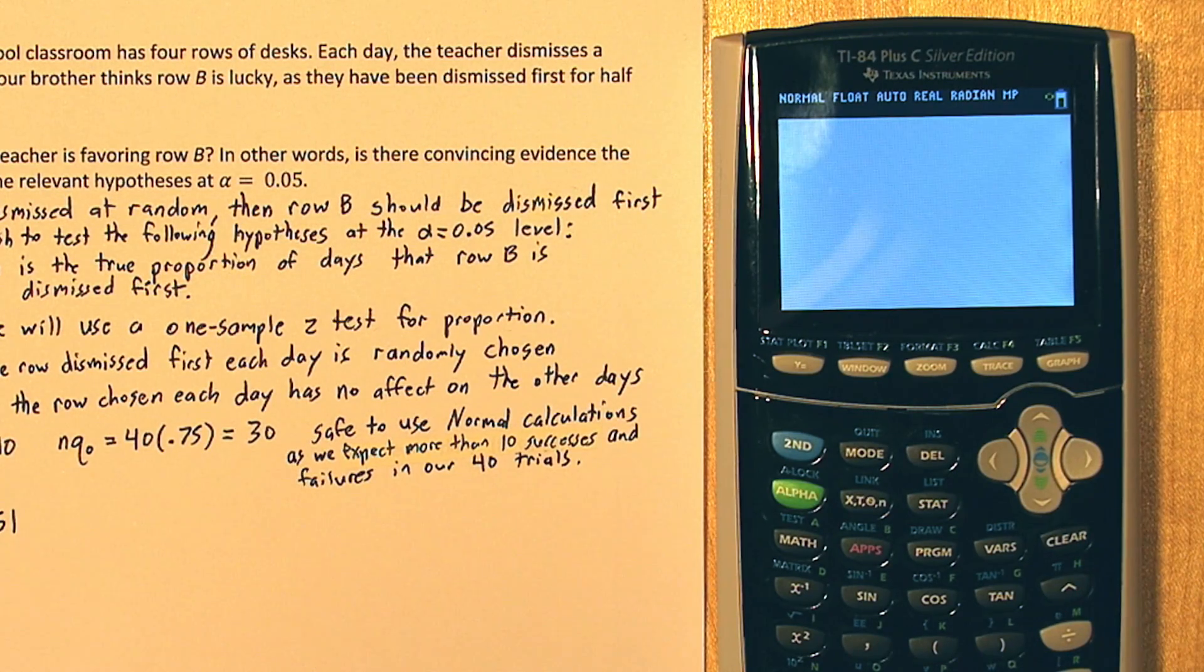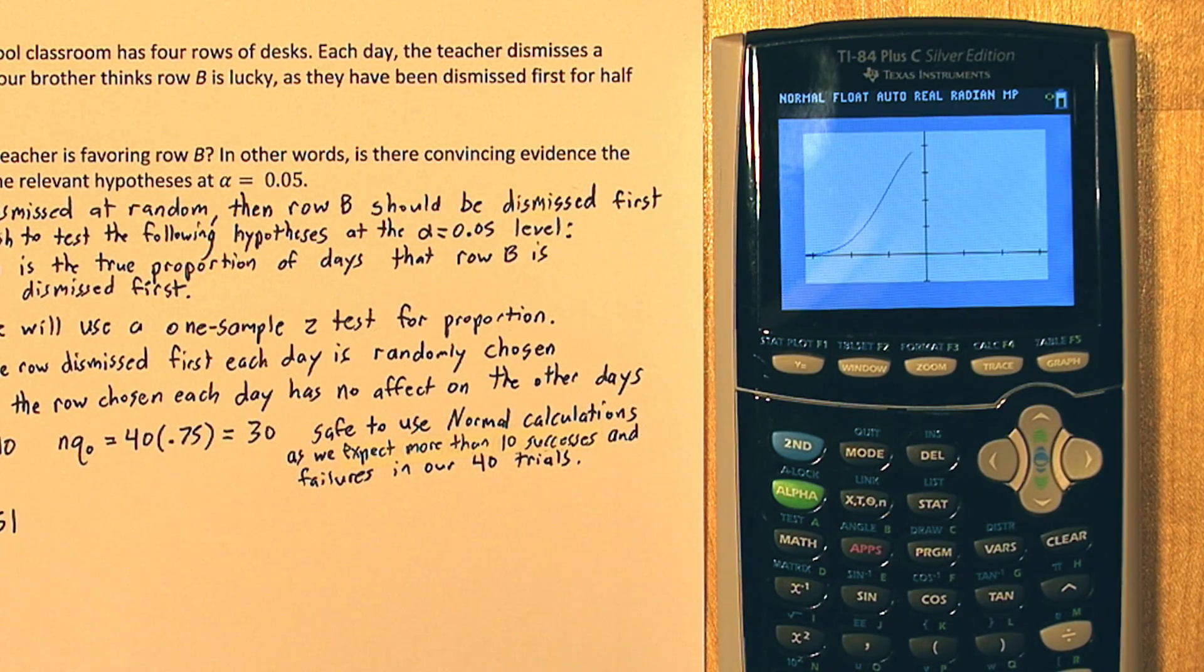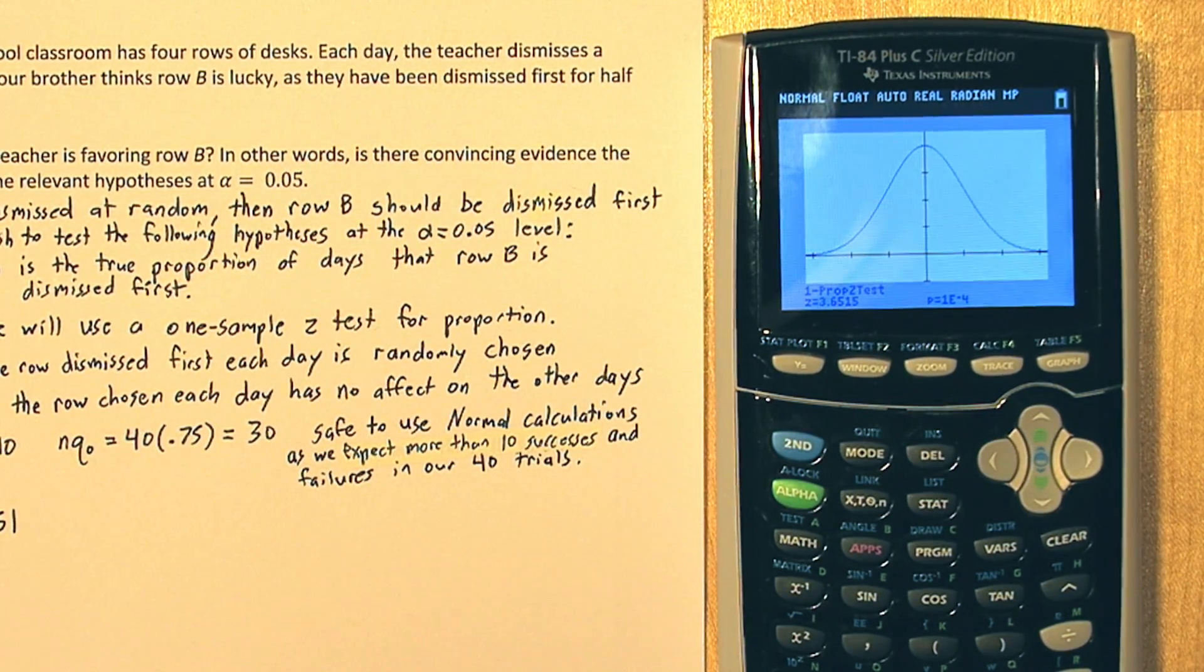If we click draw, we can see what that test statistic represents. It's drawing the normal curve, and it's put the test statistic there, as well as shaded a very tiny proportion on the right-hand side. It says our p-value is approximately 0.0001. It's in scientific notation. So that means if the true proportion of times row B is chosen first is 0.25, the probability we'd observe a sample this extreme is very, very small.